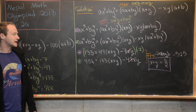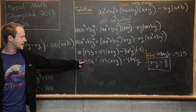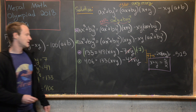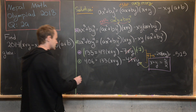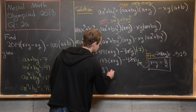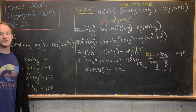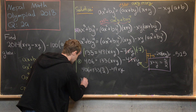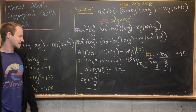Now we plug x + y = 5/2 into the green equation to find xy. This gives 406 = 133·(5/2) - 49·xy. Solving this straightforward algebra yields xy = -3/2.